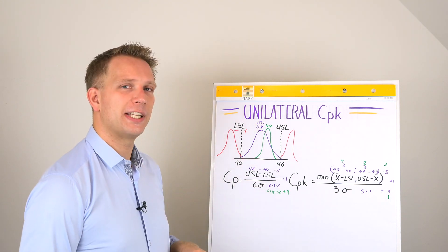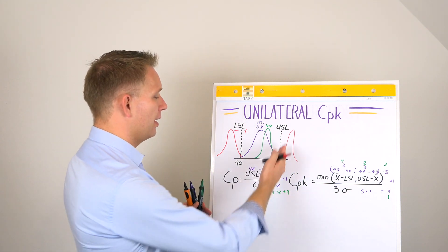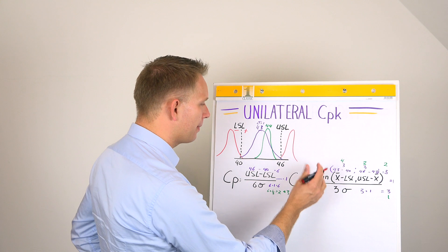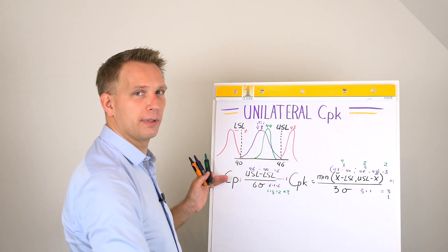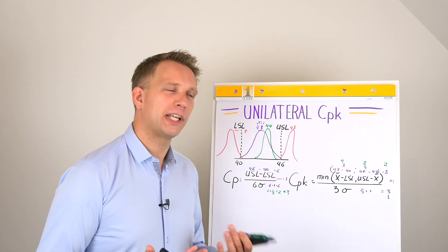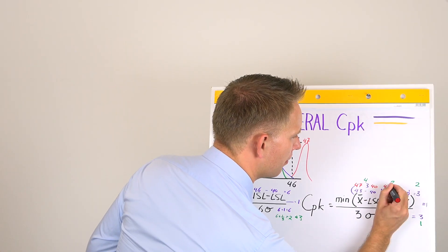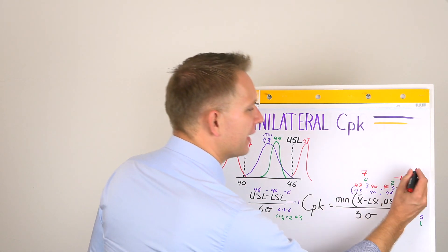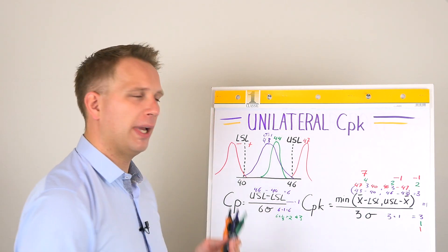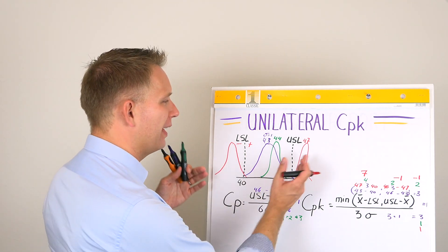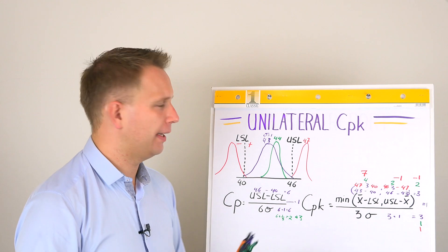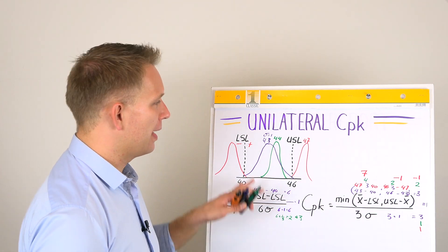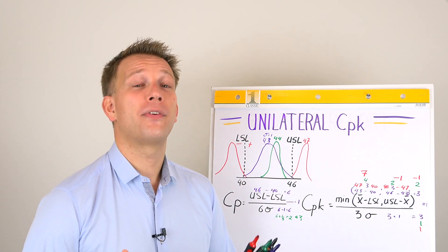The red one also has a CP of 3 because it has the same small standard deviation. But the mean is over the lower limit, and now we get into slightly funky mathematics: out of 7 and minus 1, the smallest is minus 1, divided by 1, giving a CPK that is negative. This means the process is outside the limit and never makes the product we want. The same problem happens on the left side — mean minus lower spec limit becomes negative.